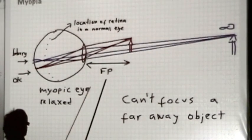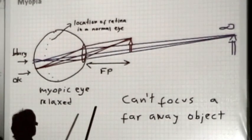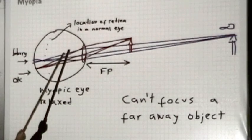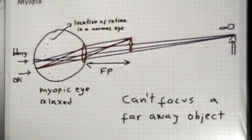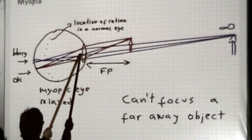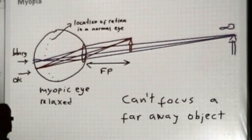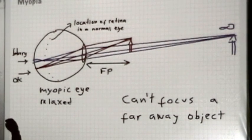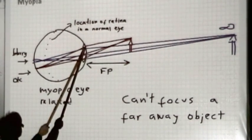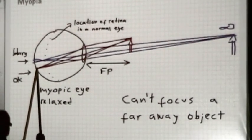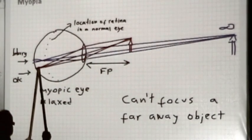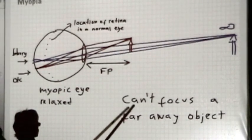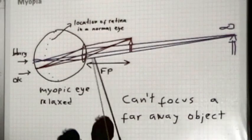The furthest distance that you can have the object from your eye is called the far point, and that far point is not infinity. The light rays coming from an object at the far point of the myopic eye will be focused on the retina, with the crystalline lens fully relaxed — no accommodation. If there was some accommodation going on, if the lens was squeezed by the ciliary muscles, the focal length would be shorter, which means the image would move forward. That would make things worse. So accommodation doesn't help, and you simply cannot focus on an object that is further away than your far point.